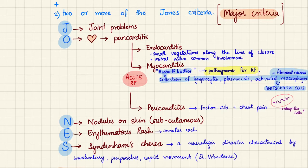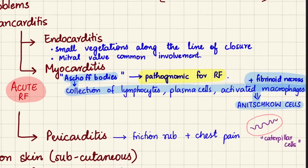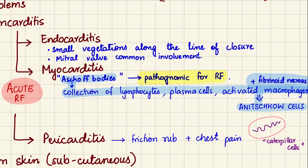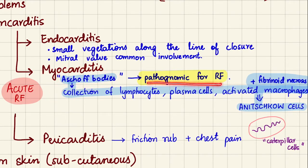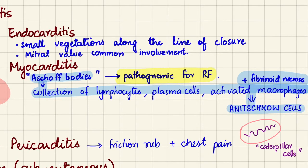In pancarditis, the whole heart is inflamed — endocardium, myocardium, and pericardium. In the endocarditis component, we see small vegetations along the line of closure of valves, with the mitral valve most commonly affected. In the myocardium, we find Aschoff bodies, which are pathognomonic for rheumatic fever — a histological feature consisting of a collection of lymphocytes, plasma cells, and activated macrophages along with fibrinoid necrosis.